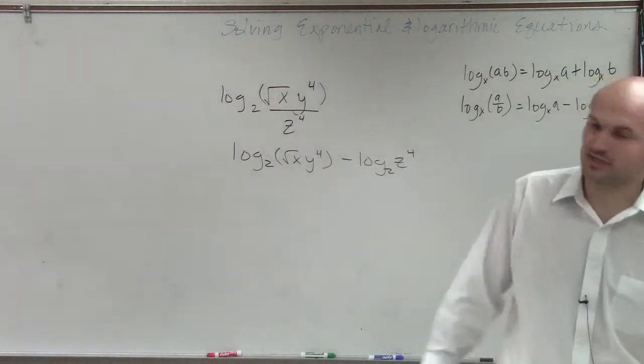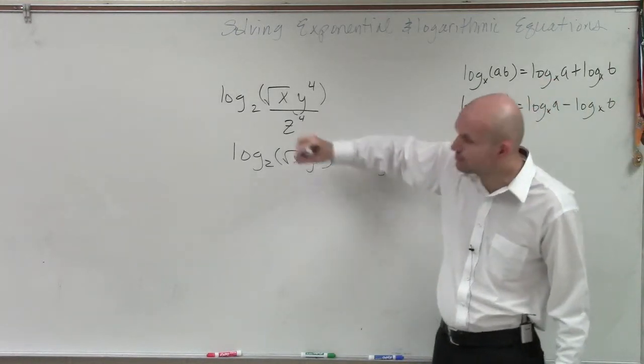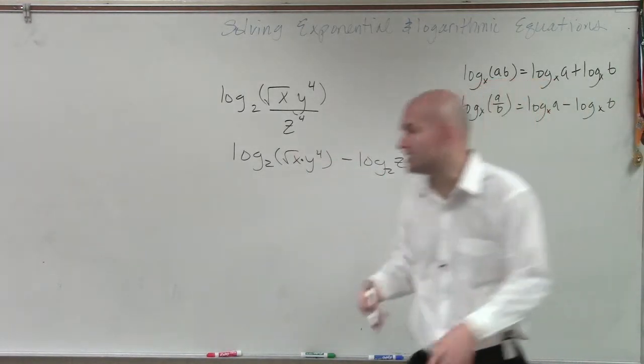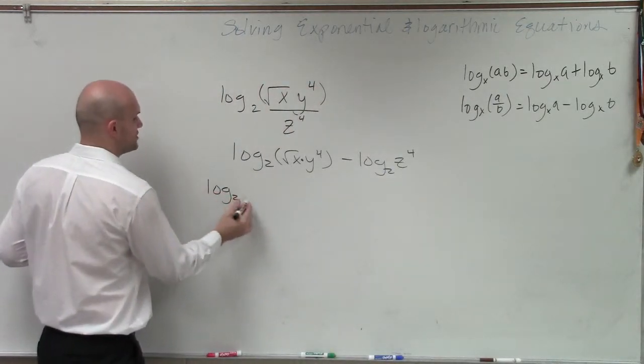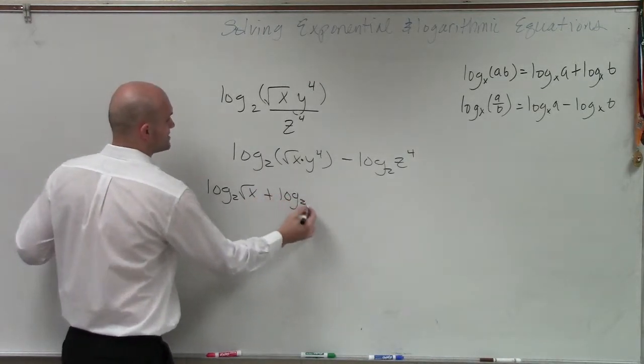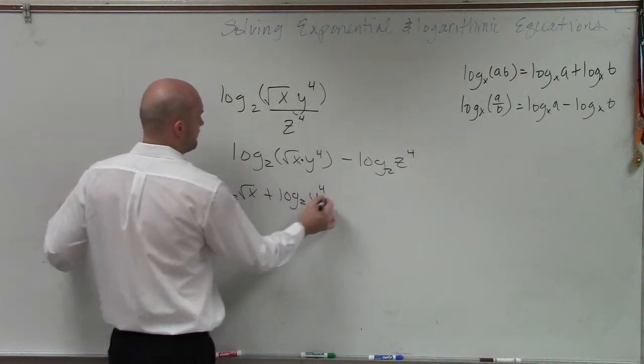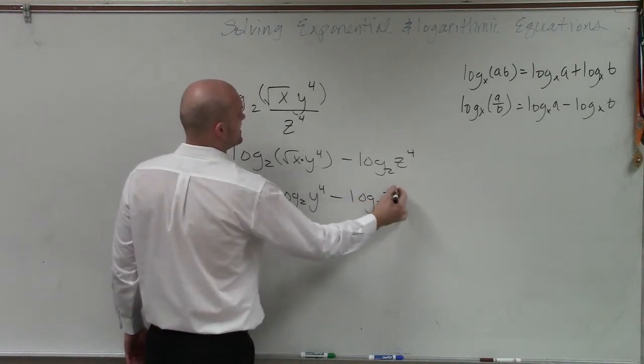Then I look at this and say, well, now I have a product, right? So I can split the product into the addition of two logarithms. Therefore, that'd be log base 2 of the square root of x plus log base 2 of y to the fourth minus log base 2 of z to the fourth.